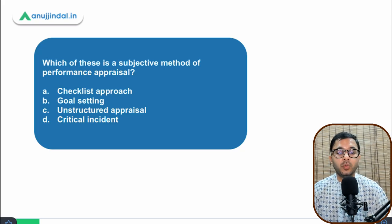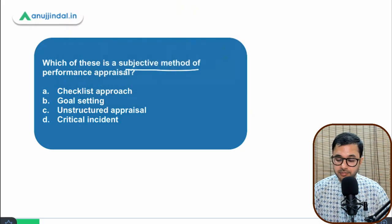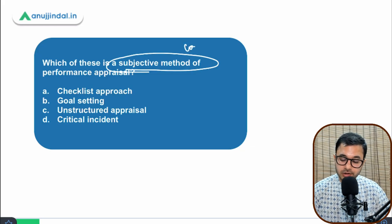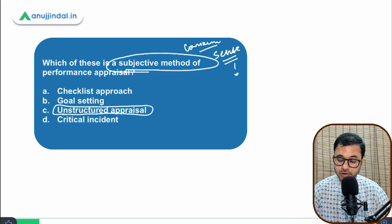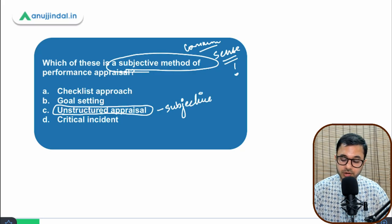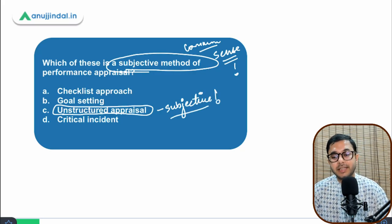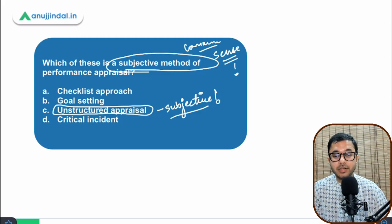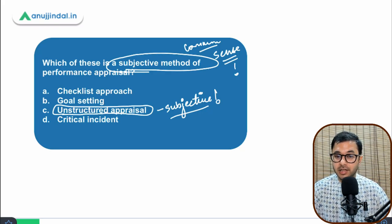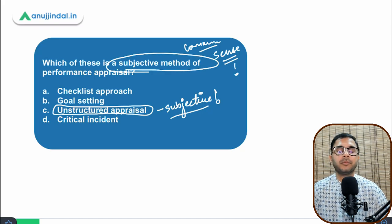Second question: which of these is a subjective method of performance appraisal? This is a common-sense question — the name itself gives you the answer. 'Unstructured appraisal' — since it's unstructured, chances are higher that it's subjective in nature. Even if you don't know the answer, you can take this chance. As my teacher used to say, common sense is not very common among people. Risk is necessary, but it must be rational and logical.